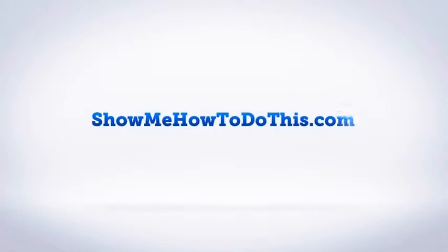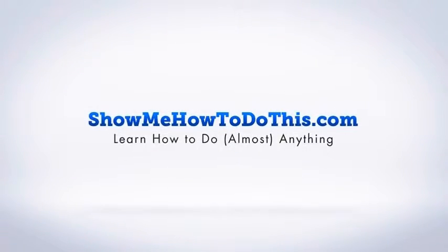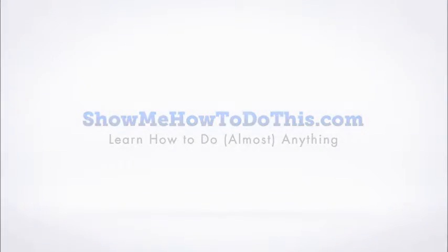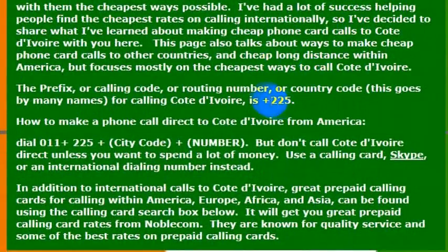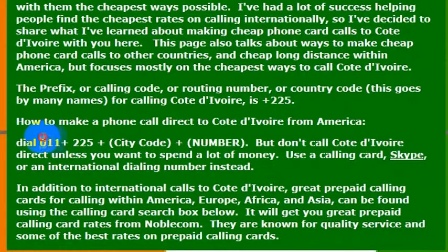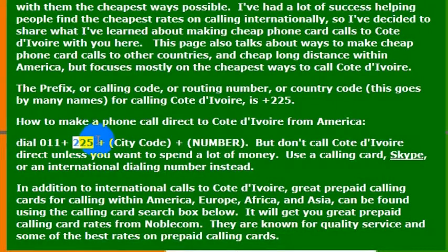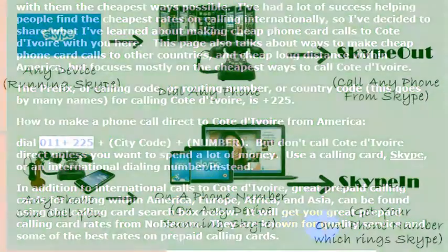Calling the Ivory Coast is a very simple thing. If I want to call a friend or family member there, all I need to do is know the country code, which is 225. If I'm calling directly from the United States from a landline-enabled phone, I would dial 011, and then the country code for the Ivory Coast, which is 225. So I would dial 011, then 225.